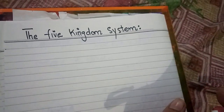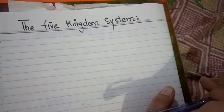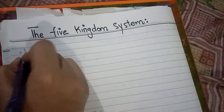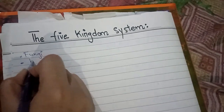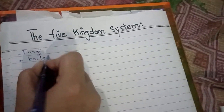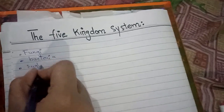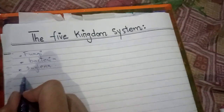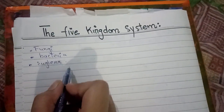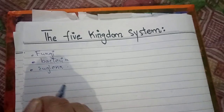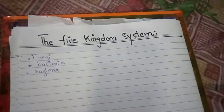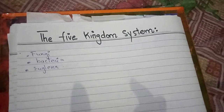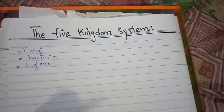The Two Kingdom System created problems. Fungi, bacteria, and some other organisms were mixed together — unicellular and multicellular organisms were placed together — which created very big problems.